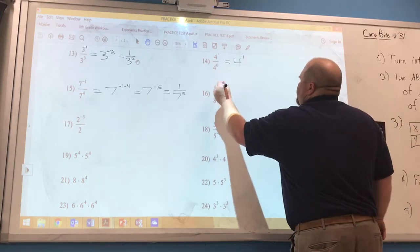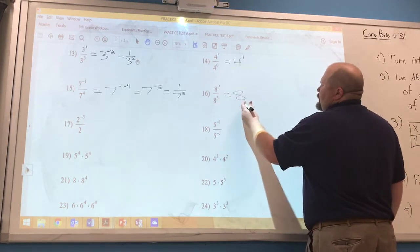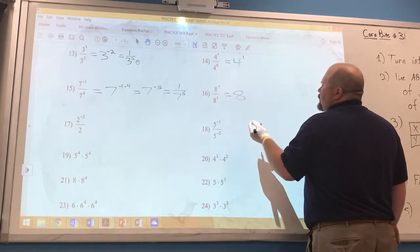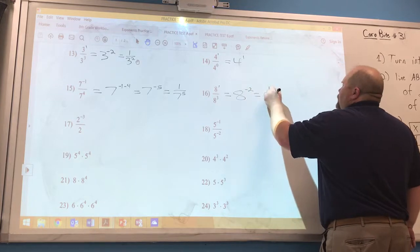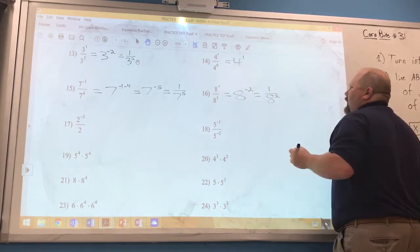Number 16, we've got a base of 8, and it's 1 minus 3. So 1 minus 3 is negative 2. And so it's 1 over 8 to the second power.